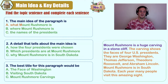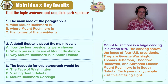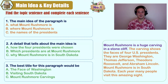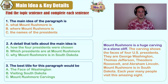The main idea of the paragraph is: A) what Mount Rushmore is, B) where Mount Rushmore is, C) the names of the presidents. I've highlighted the topic sentence in purple — in this case, it is the first sentence: 'Mount Rushmore is a huge carving in a stone cliff.' This answers A, what Mount Rushmore is. But if you continue reading, it gives even more details, including where it is — South Dakota — and the four names of the U.S. presidents. B and C are just details. A is the main idea.